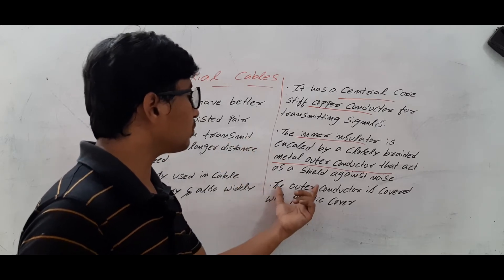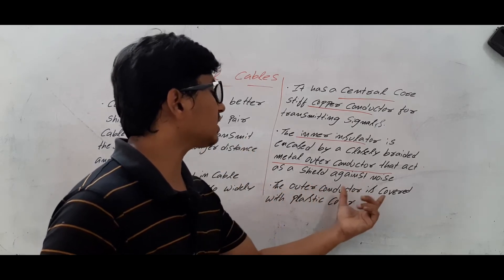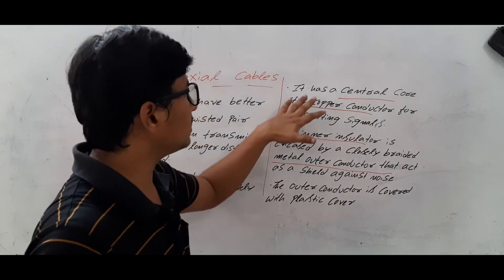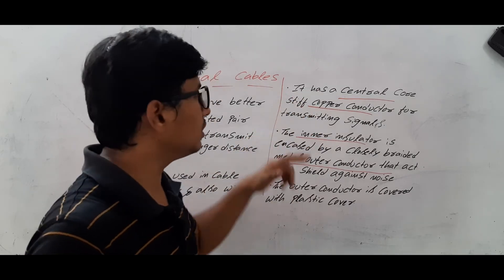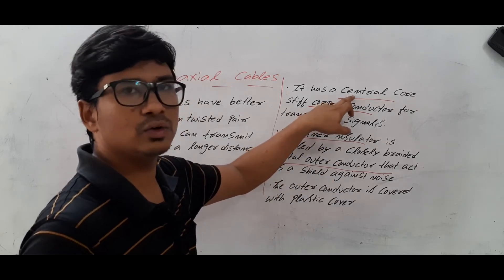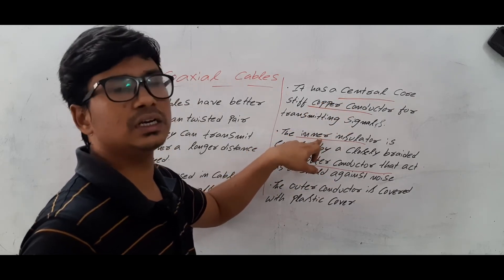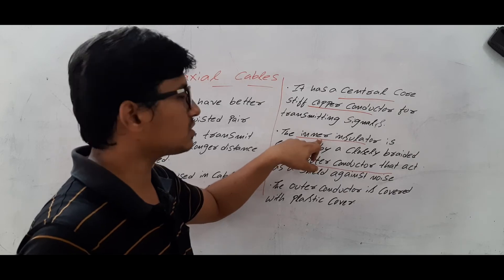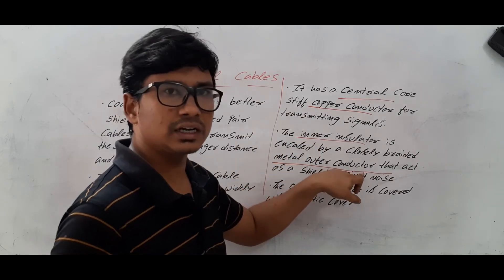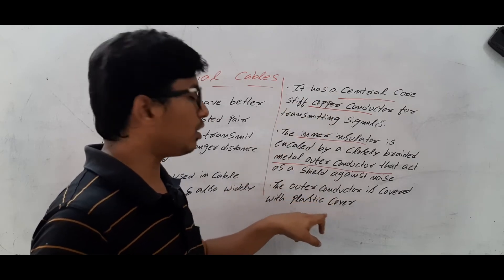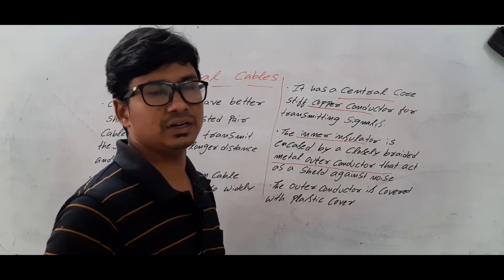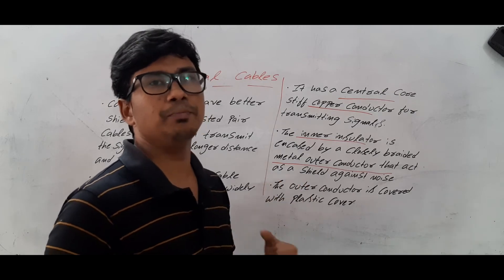On top of the outer conductor, we have a plastic cover. So totally, the coaxial cable has four parts: the central core conductor, the inner insulator on top of that, the metal outer conductor on top of the inner insulator, and a plastic cover on top of the metal outer conductor, which appears in a black color.